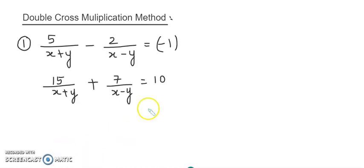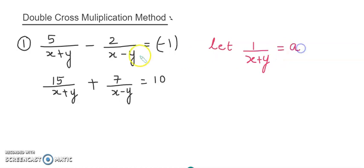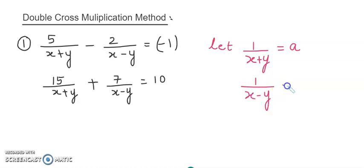Let us start with the first step where we say let 1 upon x plus y, because that is the denominator in these two terms. So, 1 upon x plus y equals to a, and the second denominator is 1 upon x minus y. So, 1 upon x minus y equals to b.